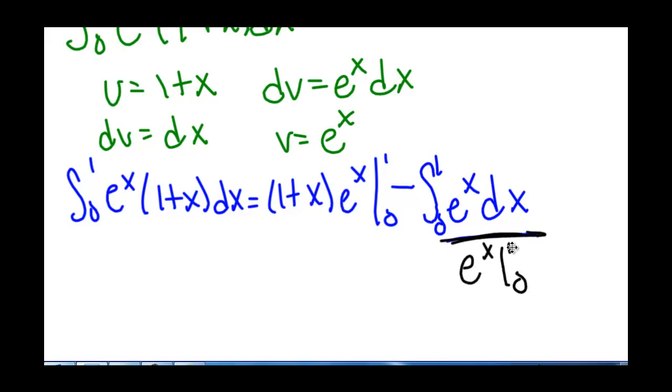So we have 1 plus x times e to the x minus e to the x, and this whole thing is being evaluated from 0 to 1.